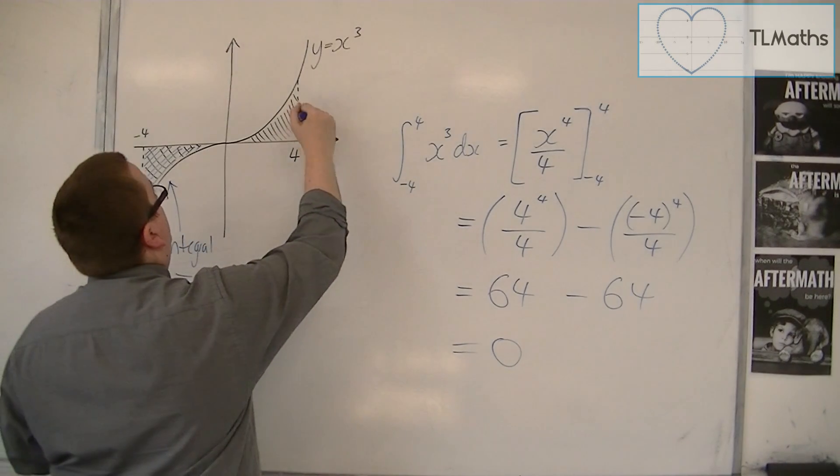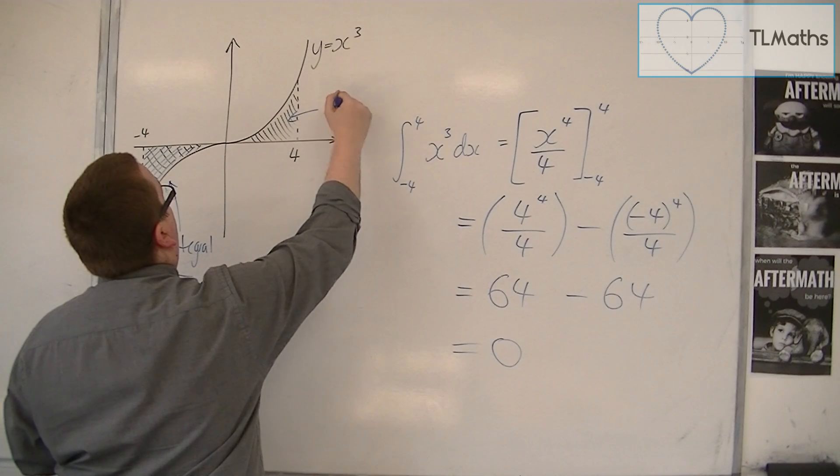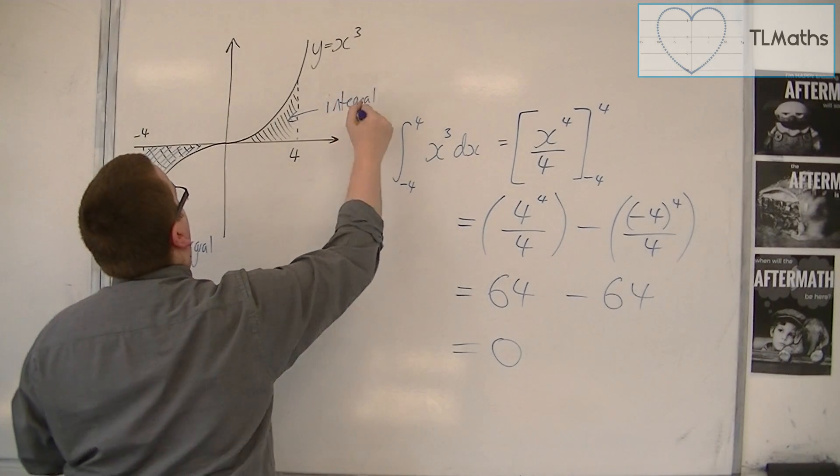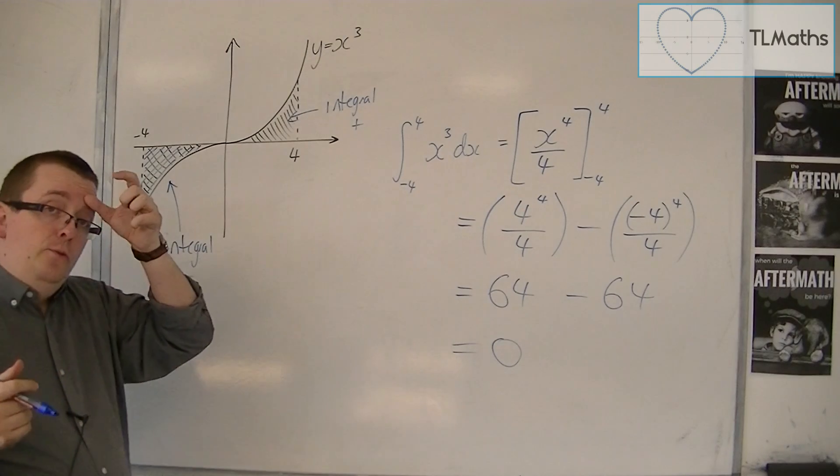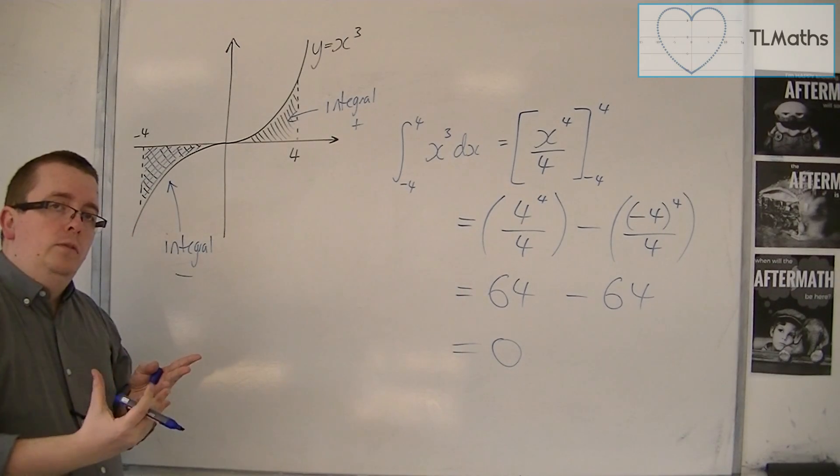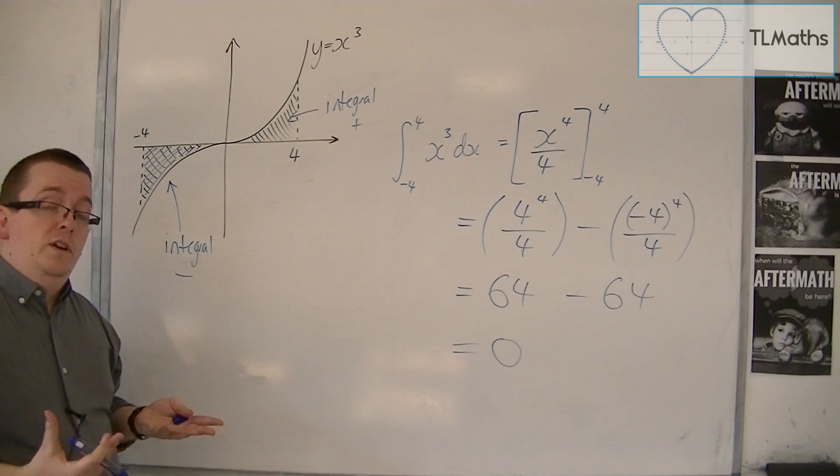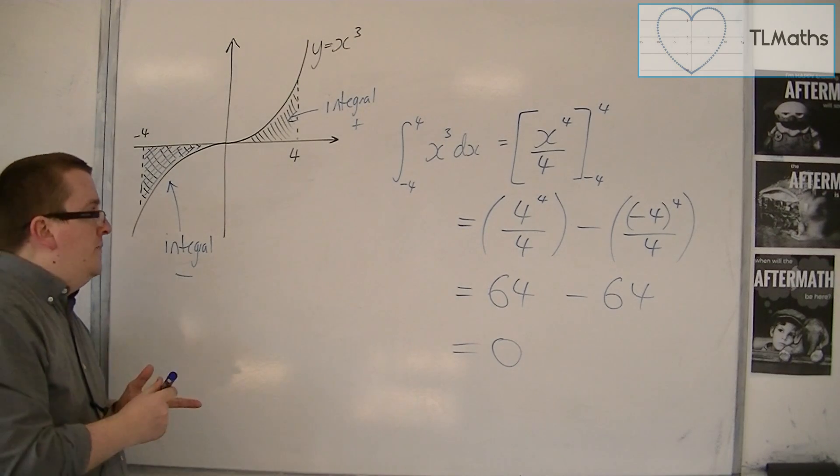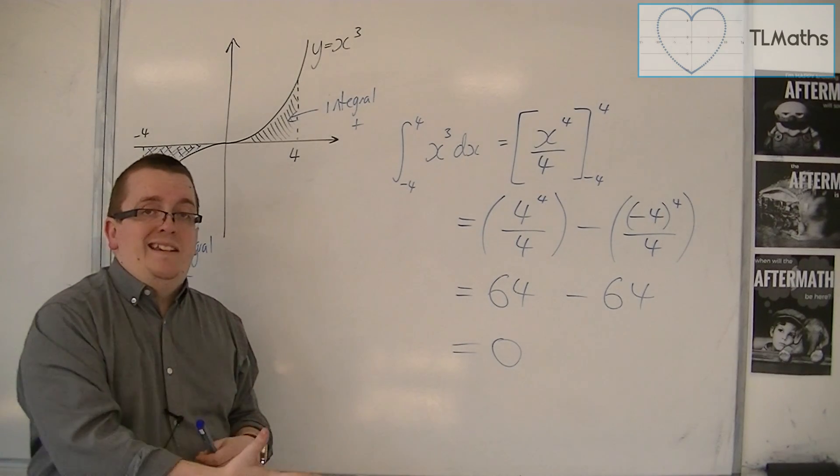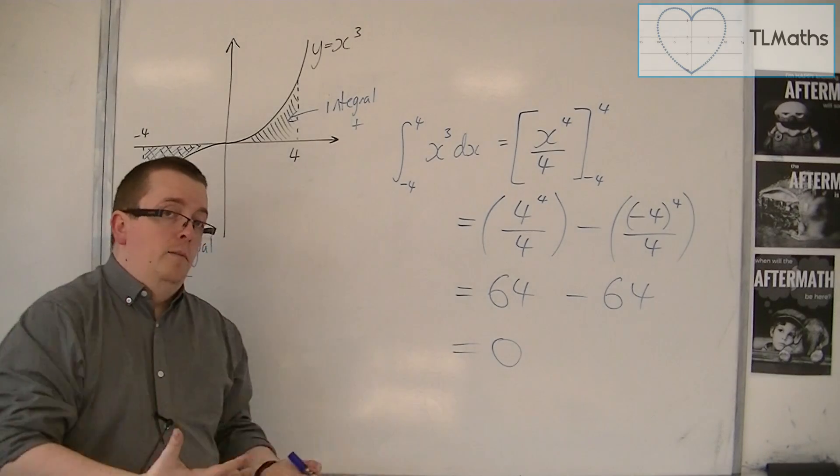And over here, because it's above the x-axis, the integral is positive. So when you combine the two in a single integral, they are cancelling one another out. So an integral can be negative, but an area can't be.